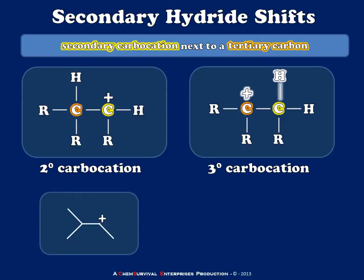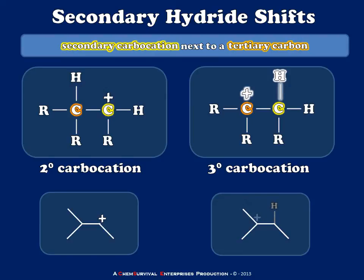In a skeletal structure, it would look something like this. Here's our secondary carbocation, and since the hydrogen isn't shown we'll put it in gray. It shifts and ultimately just relocates the positive charge to a more stable location.